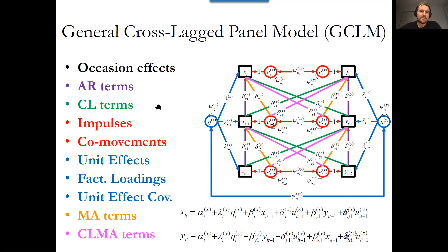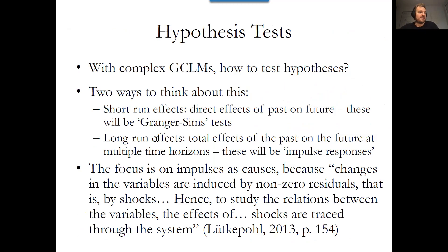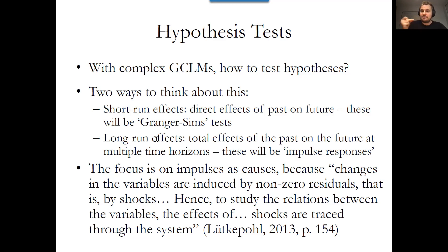In terms of causal inference, there are two ways to think about this. First, short-run effects — typically what people estimate with cross-lag models, looking at those cross-lag terms. That's actually a short-run evaluation of the relationship between two variables: from time one to time two at whatever that time scale is, all your inferences hinge on that. But you can also think about longer-run effects, or in a continuous time framework back it up to arbitrarily short intervals.